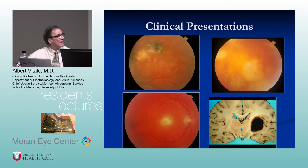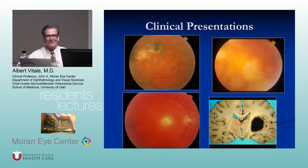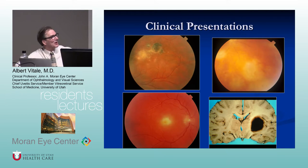Atypical presentations of toxoplasmosis: the classic Rene Coscas picture is what everyone recognizes, but it can look more diffuse. You can have acquired toxoplasmosis with an acquired macular lesion and no peripheral scar, no previous history. And there is also the CNS brain lesion pattern in patients with AIDS.